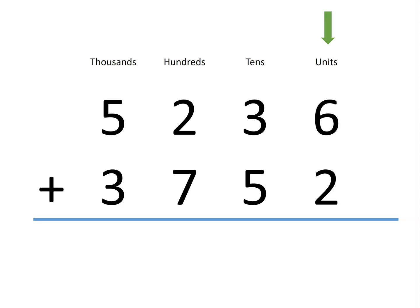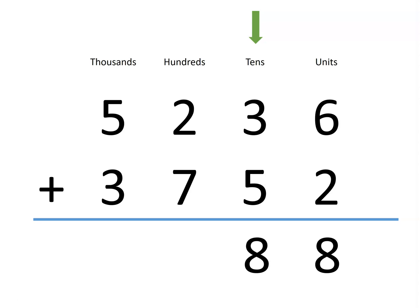6 units plus 2 units gives us 8 units. Next, we add the tens. 5 tens and 3 tens is a total of 8 tens.